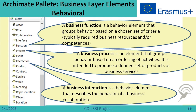Now let us turn to the behavioral or functional elements. Among these we can see business function, which groups behavior based on a chosen set of criteria. Then there is business process, which shows the ordering of activities. There is also business interaction, which represents activities performed by several performers.